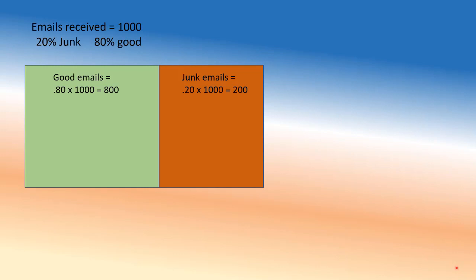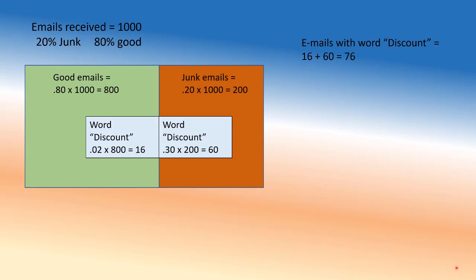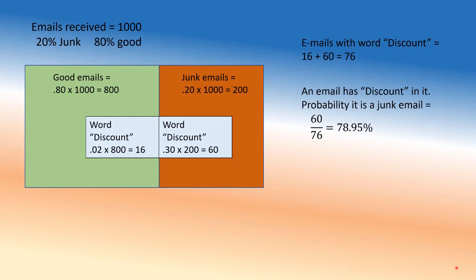Let's suppose we get 1,000 emails: 20% junk, 80% good — so 800 good emails and 200 junk emails. Now, 30% of junk emails have the word 'discount,' so 60 junk emails have it. And 2% of the good emails have the word 'discount,' so that's 16 good emails. Overall, we're looking at 16 plus 60 = 76 emails with the word 'discount.' Of those, 60 are actually junk — so the probability of junk given discount is 60/76 = 78.95%. That's Bayes' theorem, pretty much all done.